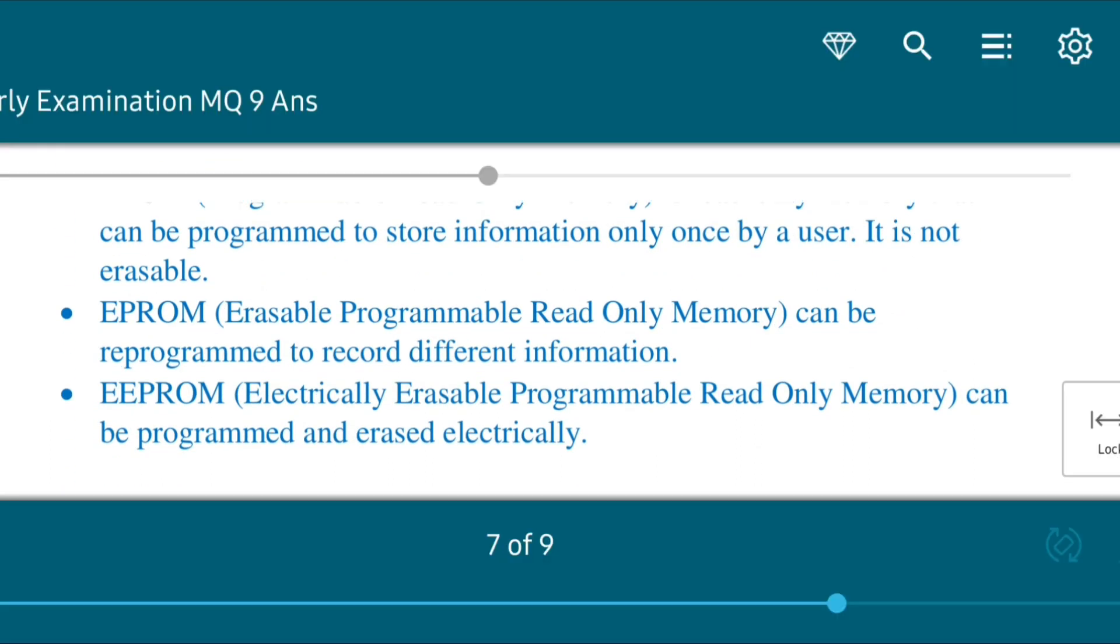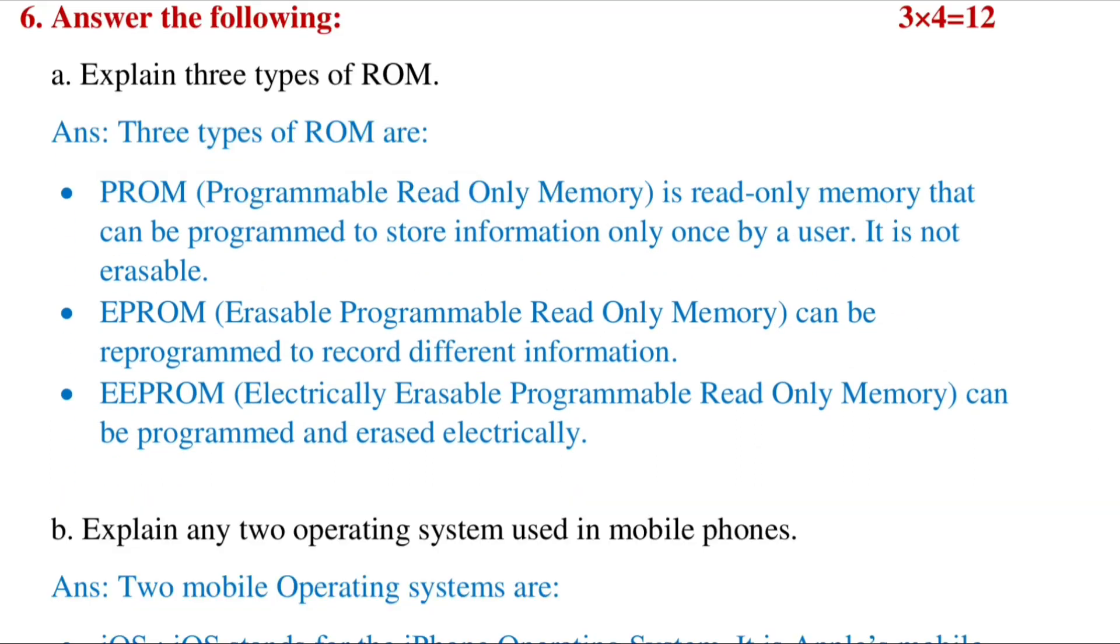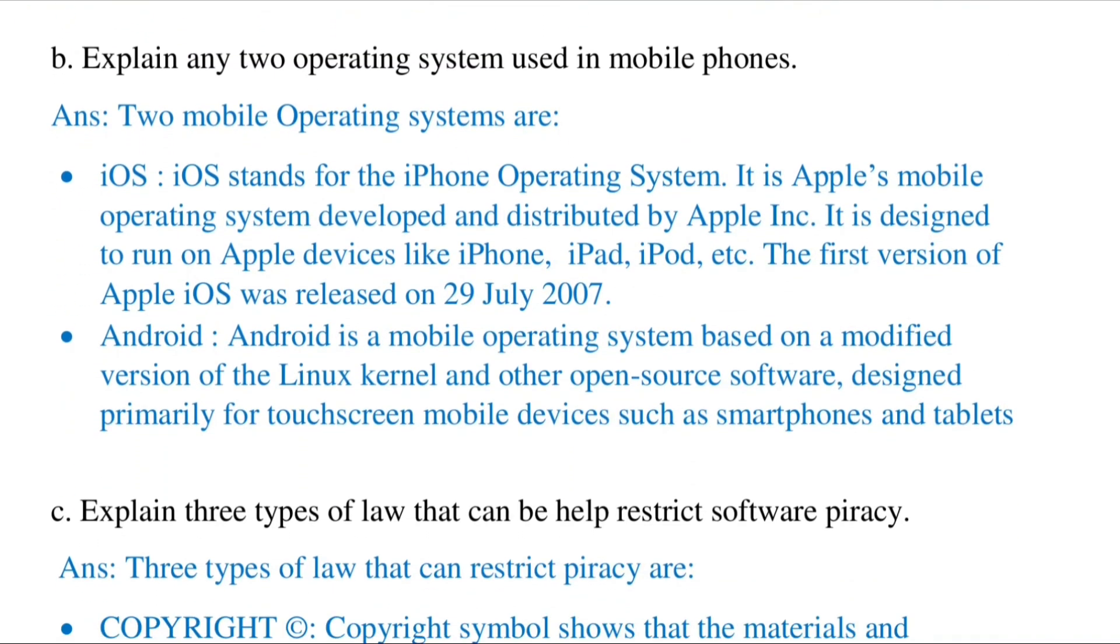Three types of RAM - you can see from here and write. Name two mobile operating systems. You can explain about iOS and Android. You can even explain Blackberry OS or Symbian, but these are already dead.